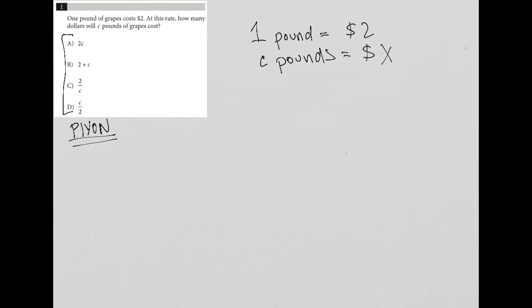Right. So anytime I see a variable or variables in the answer choices, I will tend to use the strategy of plugging in my own number. So the way this strategy works is I get to make up a value for C. So let's say C is equal to two.